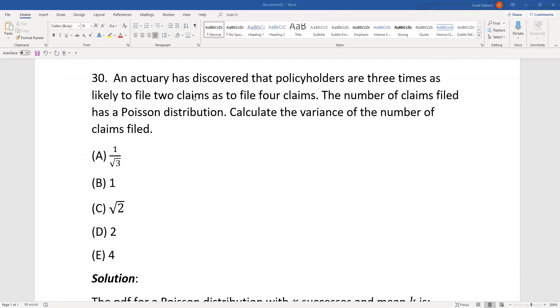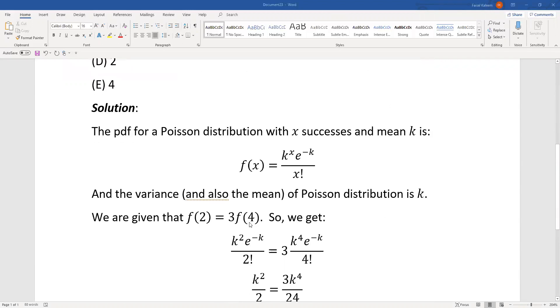So two claims is f(2). Thus f(2) = 3 * f(4), and substituting x = 2 into this equation.